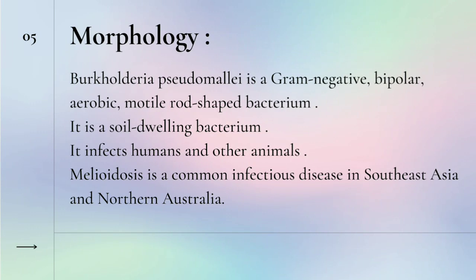Next topic is morphology. Burkhaldaria Sudumaliyae is a gram-negative, bipolar, aerobic, motile, rod-shaped bacterium and it is a soil-dwelling bacterium. It infects humans and other animals and is also capable of infecting plants.